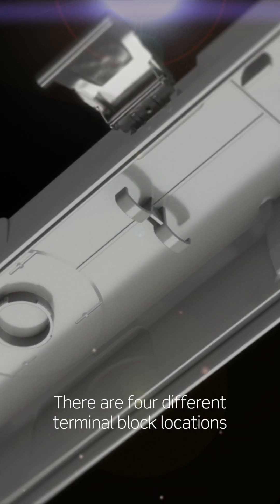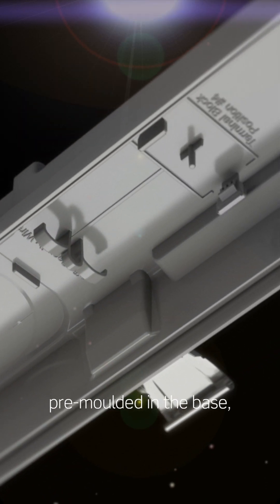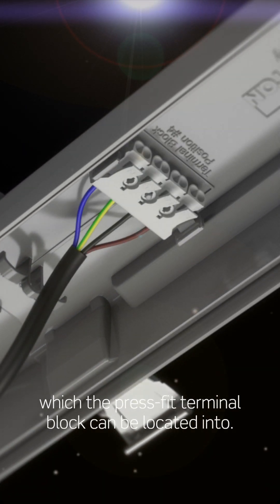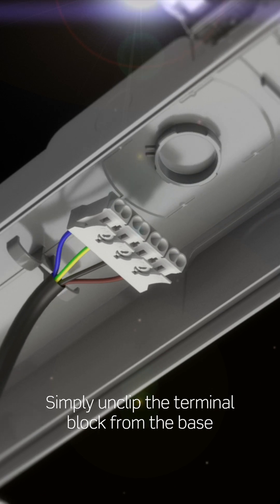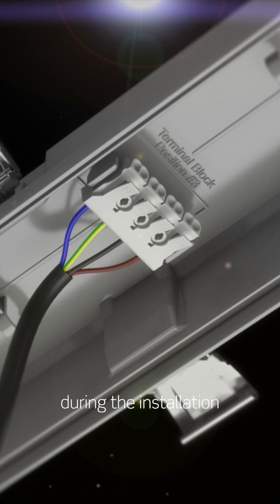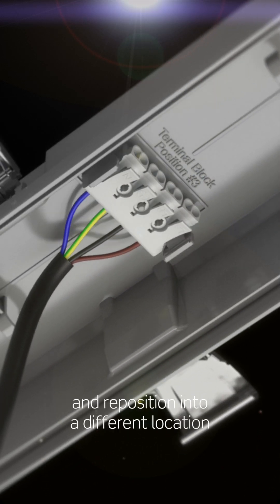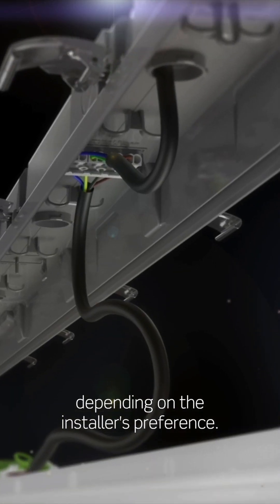There are four different terminal block locations pre-molded into the base, which the press-fit terminal block can be located into. Simply unclip the terminal block from the base during the installation and reposition into a different location depending on the installer's preference.